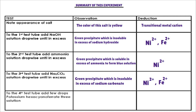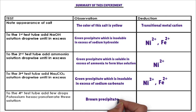Confirmatory test: to the fourth test tube, potassium hexacyanoferrate-3 solution is added. The cation that forms a brown precipitate with potassium hexacyanoferrate-3 solution is nickel-2-ion. Nickel-2-ion is confirmed. The cation present in the salt is nickel-2-ion. In the description there are links for testing other cations and anions.